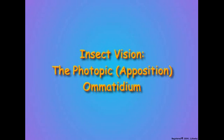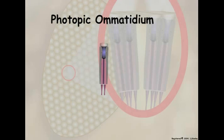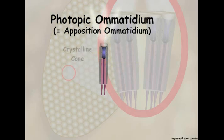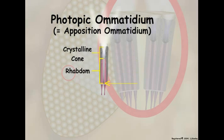Insect species that are active during the daytime when light is abundant have photopic ommatidia in their compound eyes. The photopic ommatidium was earlier called an apposition ommatidium because the base of the crystalline cone is in direct contact, or in apposition, to the rhabdom. In photopic ommatidia, incoming light is focused on the base of the crystalline cone and directly onto the rhabdom, the light-sensitive sensory region of the retinula cells.